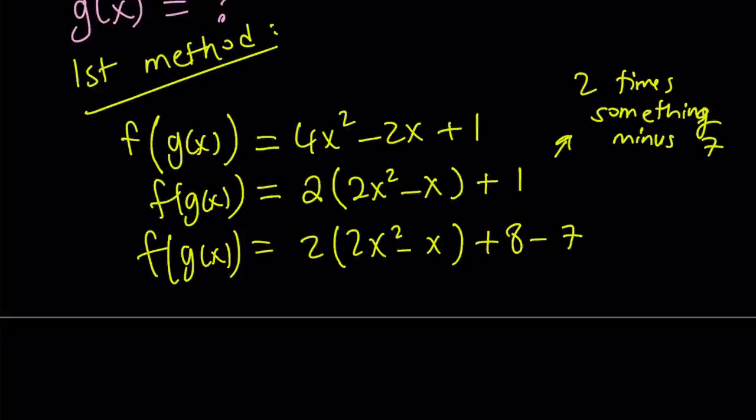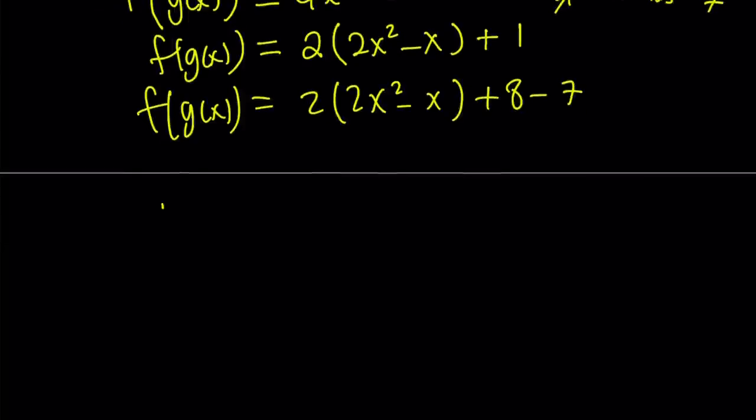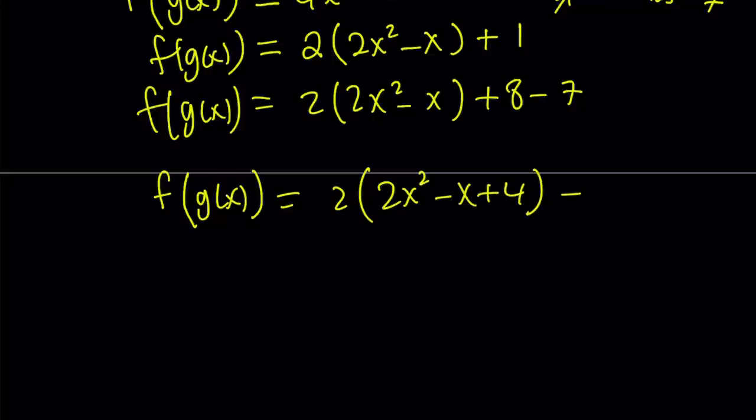So now I'm going to leave out the minus 7 and put the 8 inside. So how can I get the 8 inside? I can write it as 2 times the quantity 2x squared minus x plus 4. There you go. Now when you distribute the 2, you're going to get 8 from there. Minus 7 is left outside. And guess what?